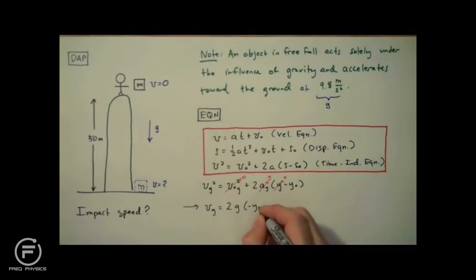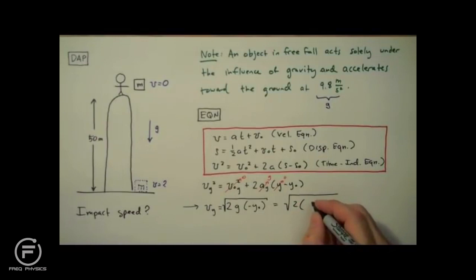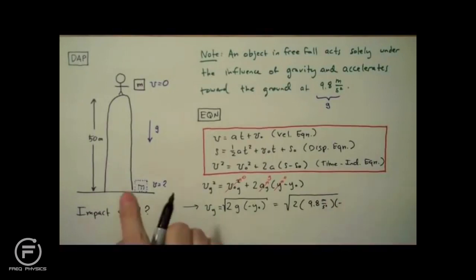And since vy was squared, we're going to take the square root of this side of the equation. And we're done. We just have to plug in our initial values. So vy is equal to the square root of 2 times 9.8 meters per second squared times negative 50 meters.